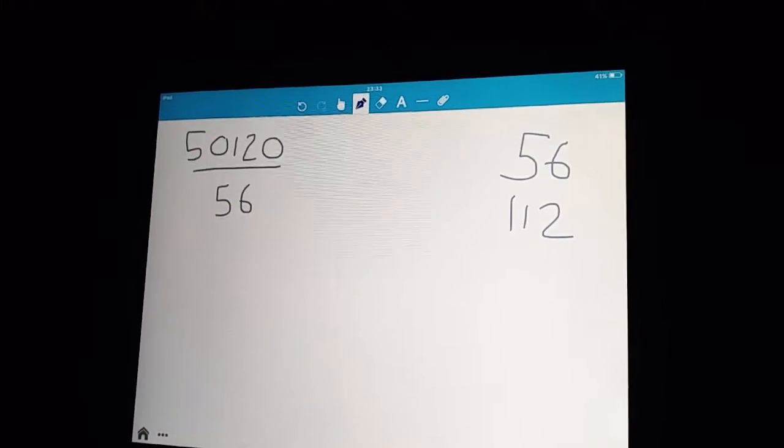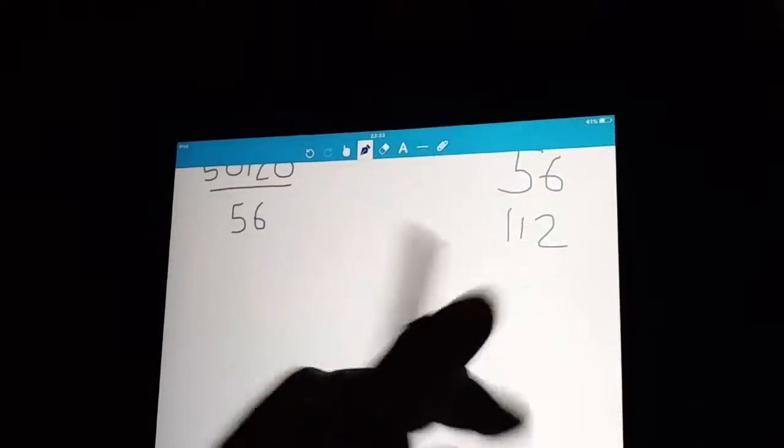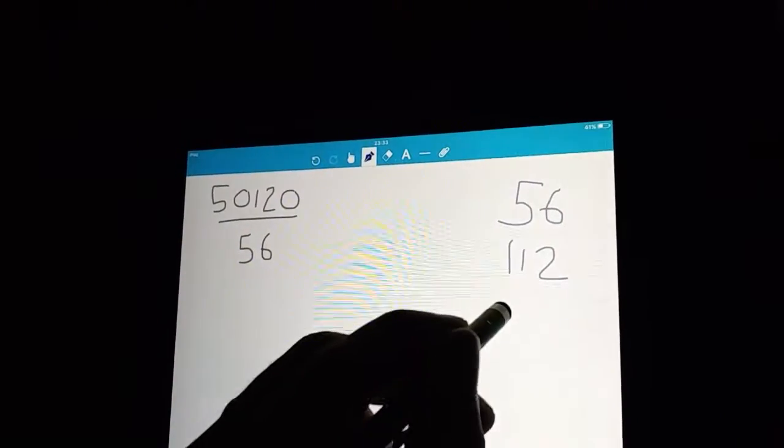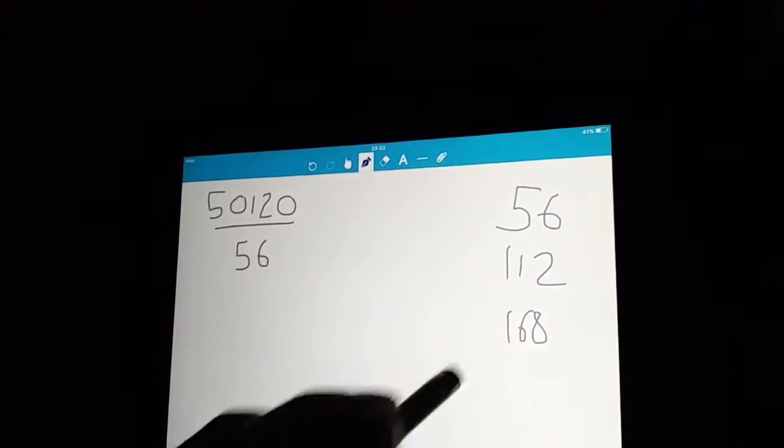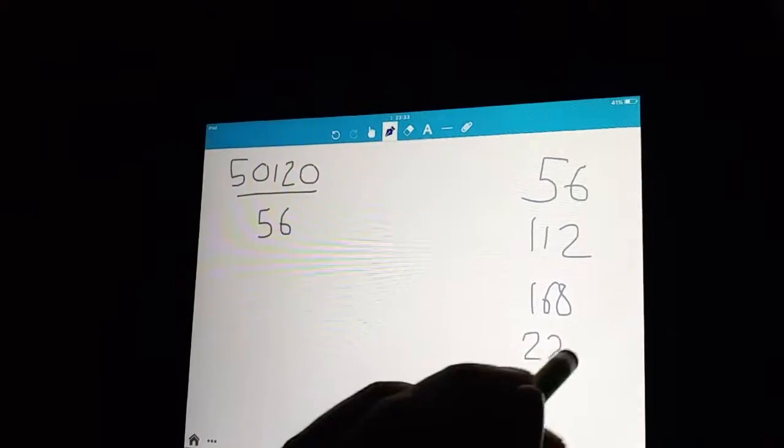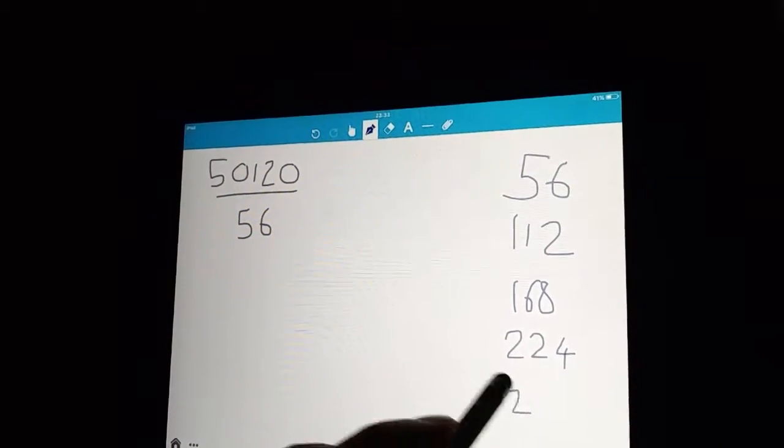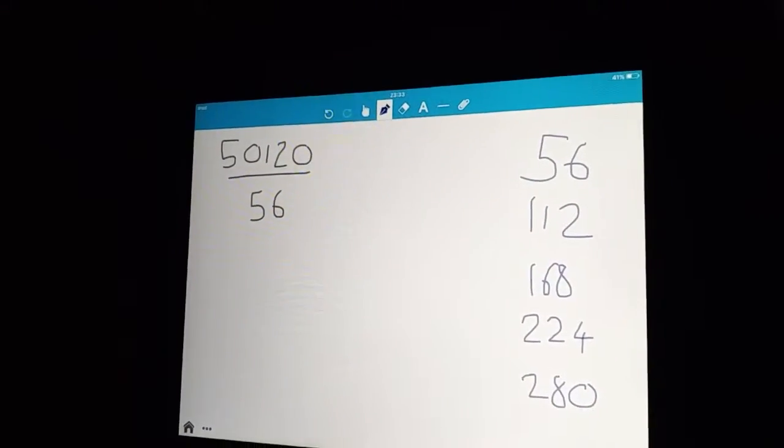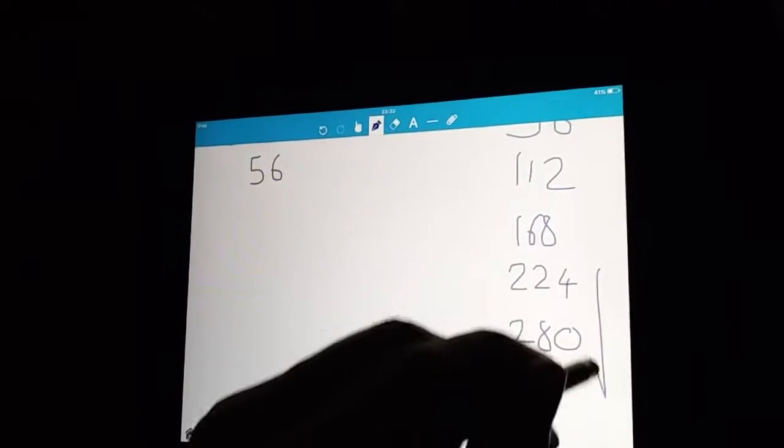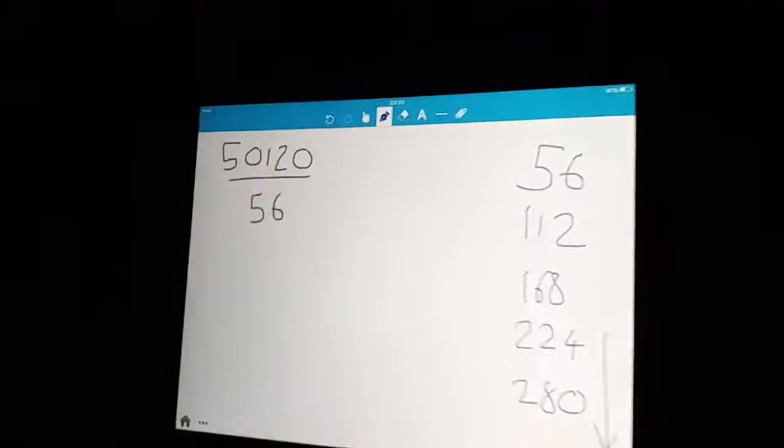You have to just add 56 every time. If you're not okay with doing that in your head, you have to do it in a column addition every time. So 6 plus 6 is 12, carry the 1. 5 plus 5 is 10, add the 1, it's 112. Then you keep going and fill up this times table. It is slow. There's nothing you can do. You've just got to put the work in. So 56 add 112 is 168. 56 add 168 is 224. 56 add 224 is 280. I'm going to stop at the fifth number.